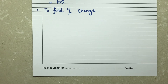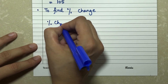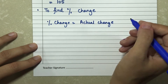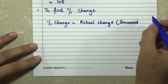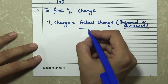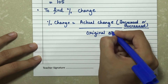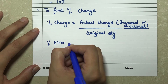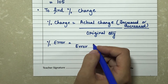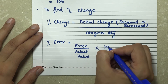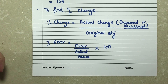Sometimes we need to find the percentage change — how much change there is in the final value. The formula for percentage change is: (actual change / original quantity) × 100. For percentage error, we write: (error / actual value) × 100. These are our formulas; let's apply them to questions.